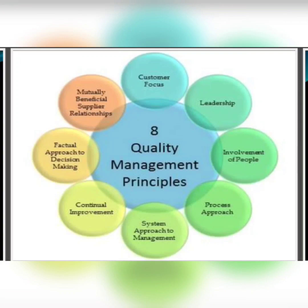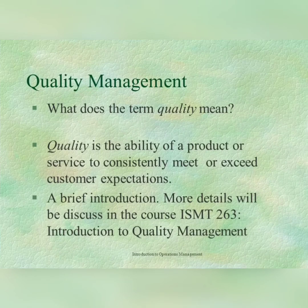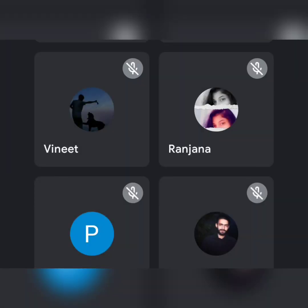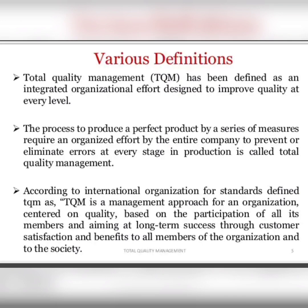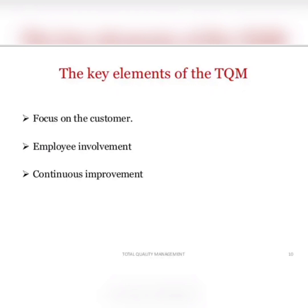Total quality management is a combination of three words. It is basically used to eliminate errors at every stage in production. It includes three elements: focus on customer, employee involvement, and continuous improvement.